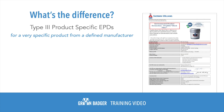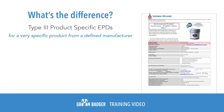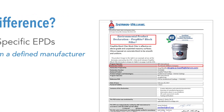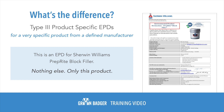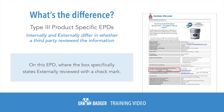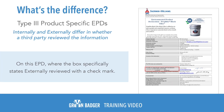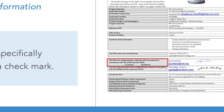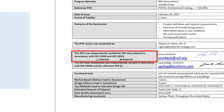Type 3 product-specific EPDs are for a very specific product from a defined manufacturer. You'll see it pretty easily — this EPD is for Sherwin-Williams Block Filler. Nothing else, only this product. You can see it's clearly labeled for Sherwin-Williams, and it's clearly labeled PrepRite Block Filler. Type 3 internally and externally reviewed just differ in whether an outside third party reviewed the information. You'll see it checked on an EPD pretty obviously, such as the case on this EPD, where there's a box that says internally reviewed and a box that says externally reviewed, and the externally reviewed is clearly checkmarked.